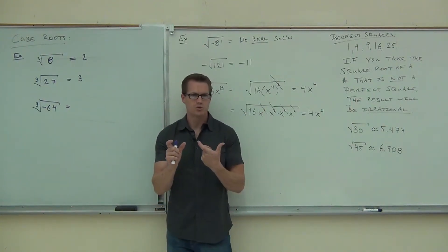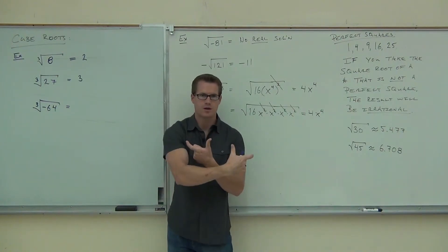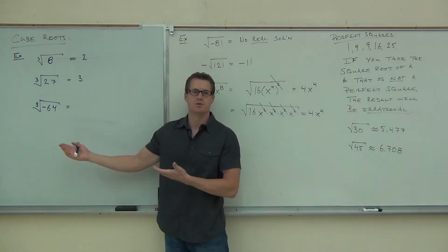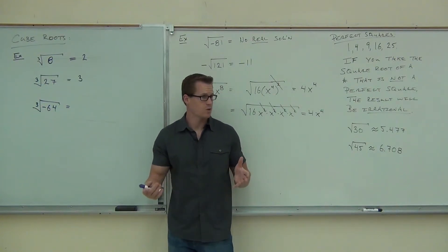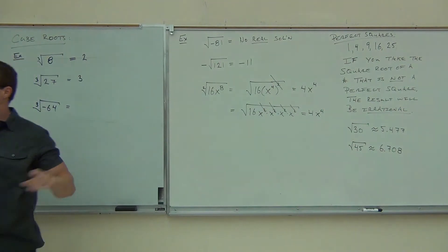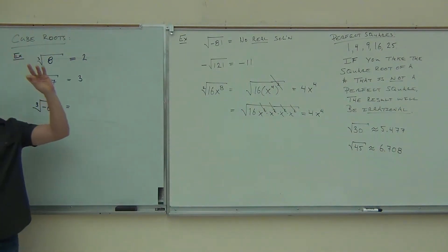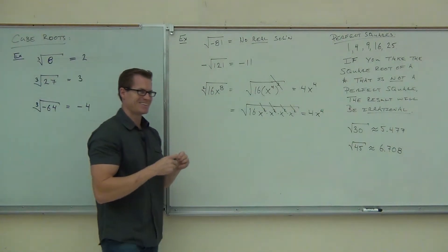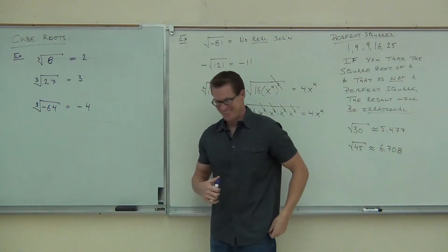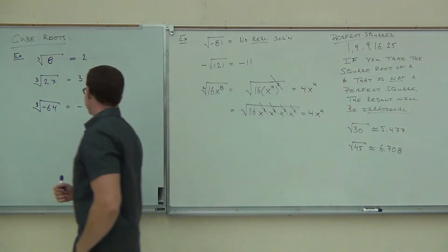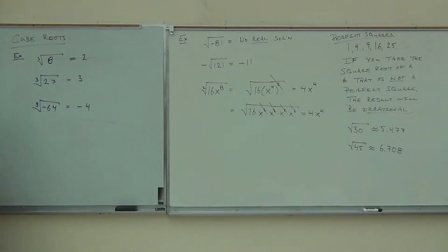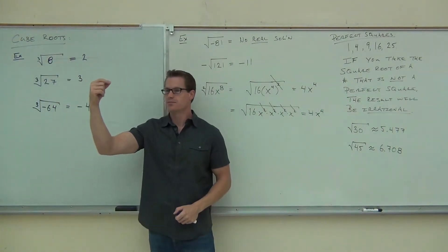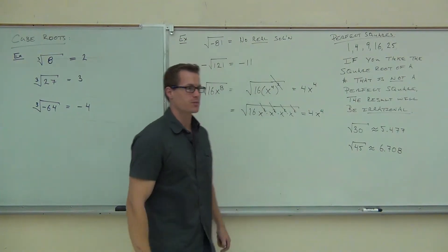A square root says a number times itself. A cube root says a number times itself times itself. Is a negative times a negative times a negative equal to a negative? Yes — so negatives are possible inside of a cube root. What times itself 3 times gives you negative 64? Negative 4, because negative 4 times negative 4 is positive 16, times negative 4 again gives negative 64. So that is possible.